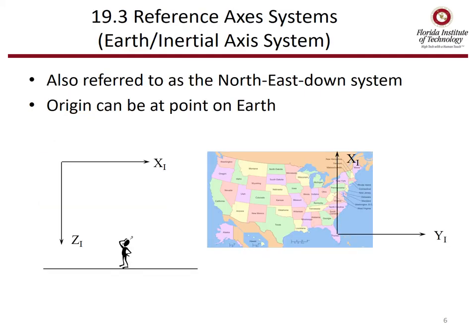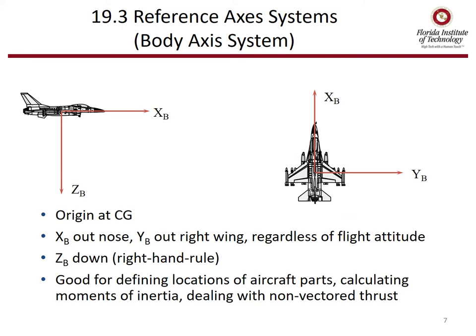When dealing with stability and control, we have to consider a reference axis system. The first one is the earth or inertial axis system, also referred to as north-east-down. The origin of this axis can be any point on the earth. But we really want a body axis system — something that moves along with the aircraft, rotates with the aircraft, and accelerates with the aircraft.